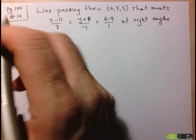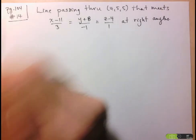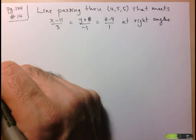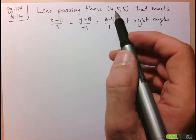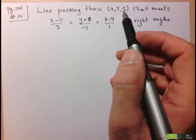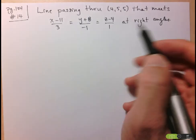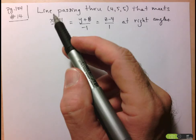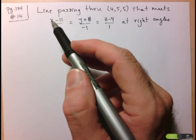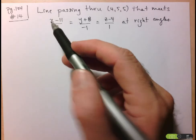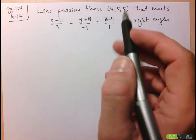Hi folks, we're going to take a look at question number 14 from page 104. What they're looking for is the equation of a line that passes through (4,5,5) and meets a given line at right angles. They don't specify what version of the line they want, so we can pick whatever we like.